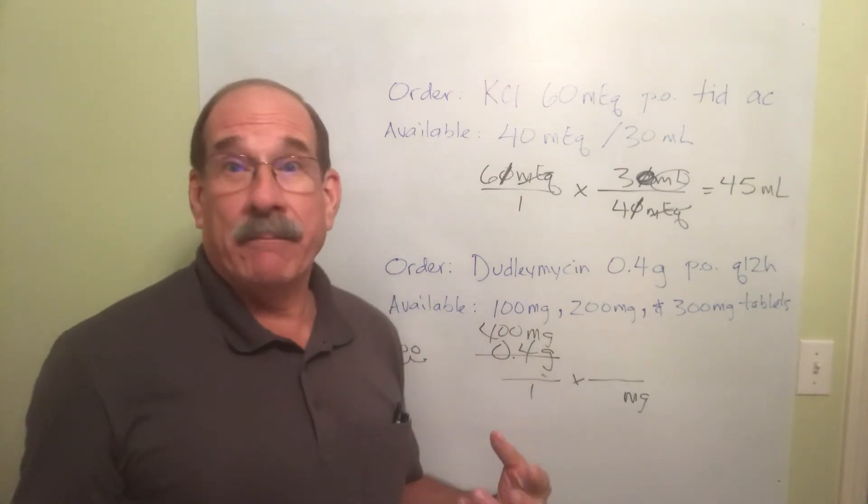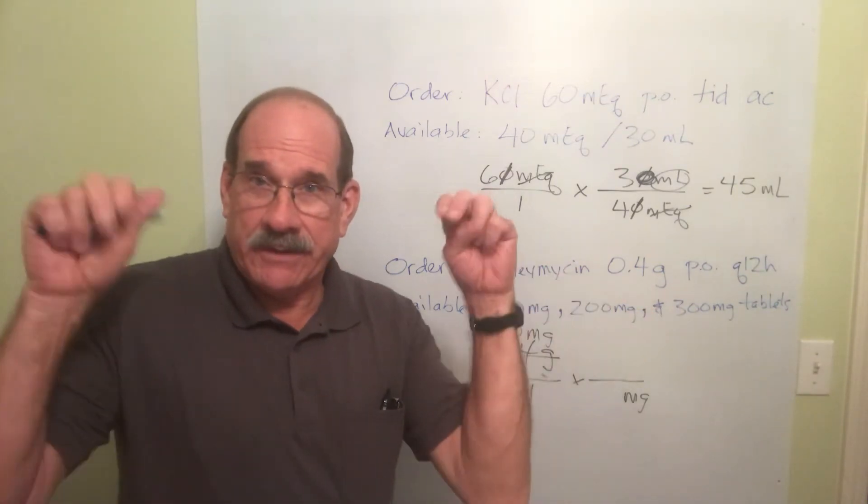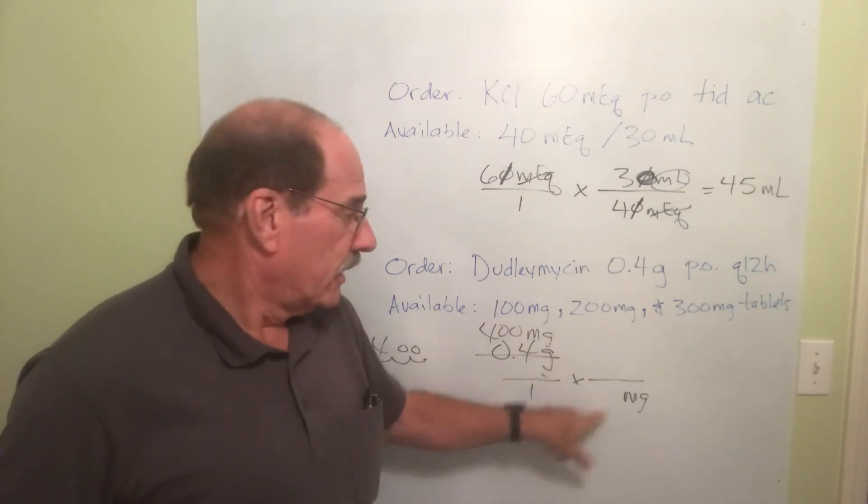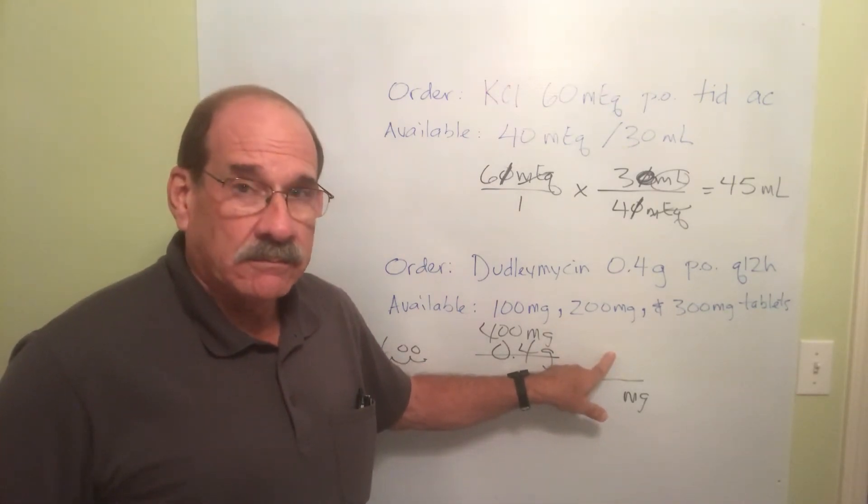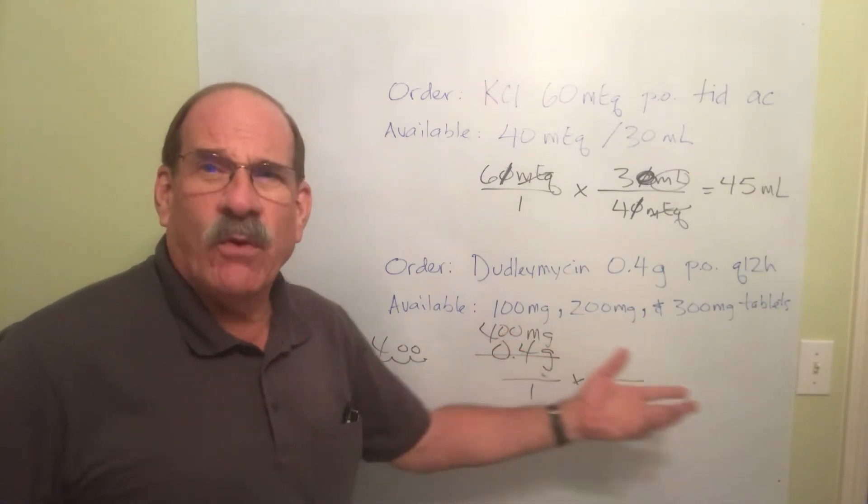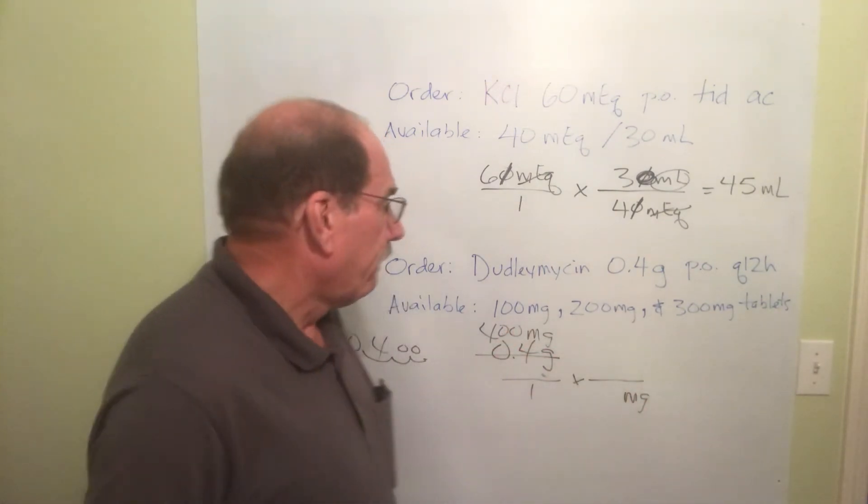What if this is 100 milligrams per one tablet here? 400 divided by 100, that's four. I got to give four tablets. Hmm. What if I put 200? 400 here divided by 200 here, I give two of those.